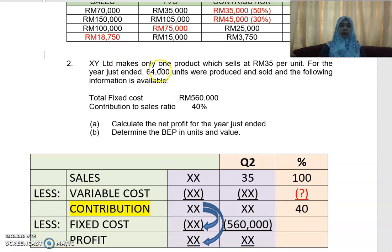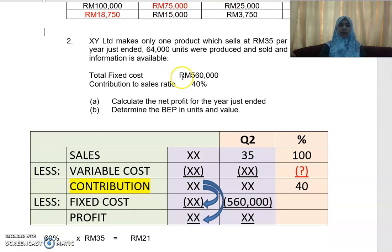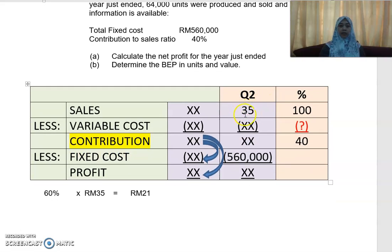Now look at the second exercise. XY Limited makes only one product which sells at RM35 per unit — that is the selling price. For the year just ended, 64,000 units were produced and sold. Total fixed cost is RM560,000 and the CS ratio is 40%. You need to work out the net profit for the year just ended.